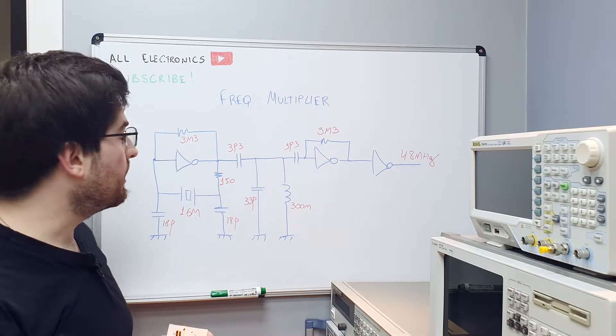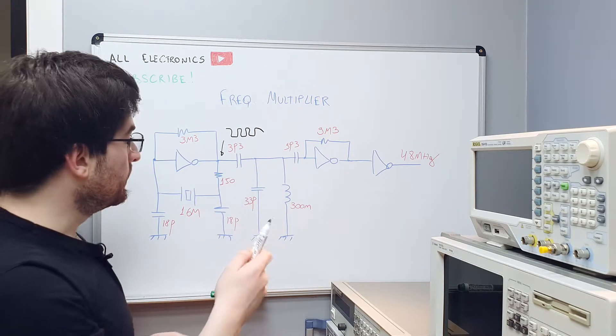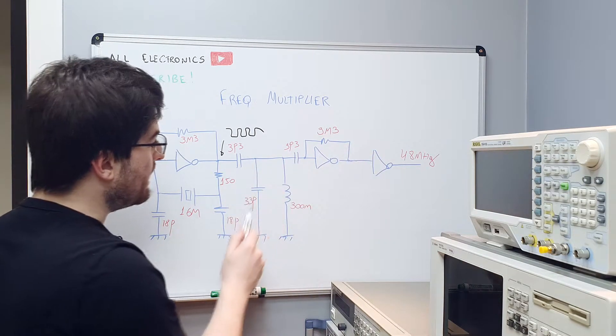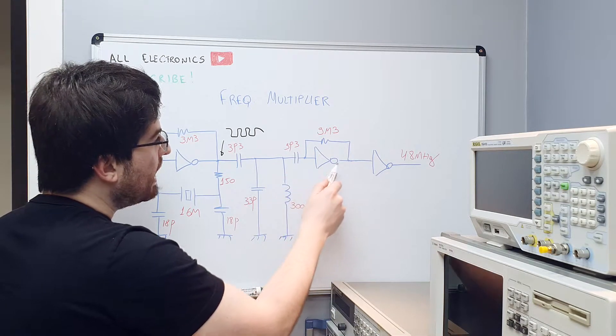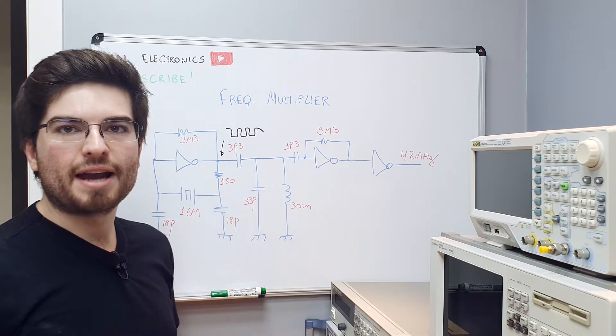I think the design is very clever because this oscillator outputs a square wave here. So the output signal of the oscillator already is rich in harmonics, so we only need to filter the third harmonic here. This filter is a bandpass filter at 48 megahertz and amplifying the small harmonic to get the output frequency on the output. Let's see the circuit working on the bench.